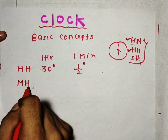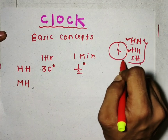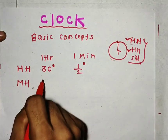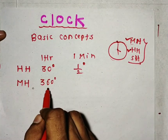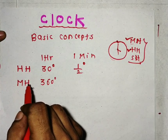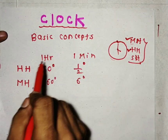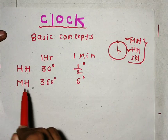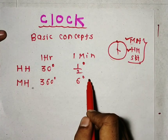Similarly, in one hour the minute hand goes ahead — as we know, in one hour there are 60 minutes, and in one hour the minute hand completes one full round, meaning it completes 360 degrees. So in one hour the minute hand goes ahead by 360 degrees. And in one minute the minute hand goes ahead by 6 degrees.